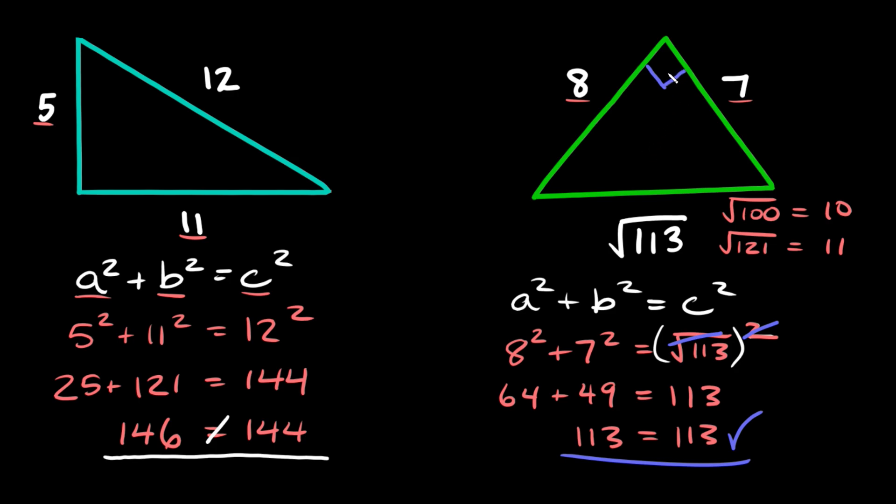And the reason that we know that is because the right angle is always on the opposite side of the longest side. So if the longest side, the hypotenuse, is down here, that means the right angle is up here.